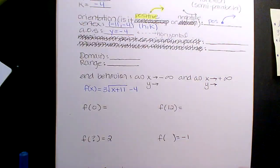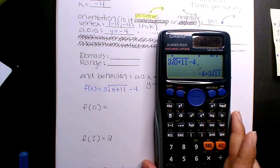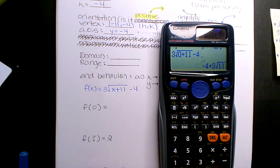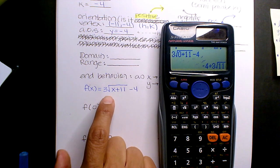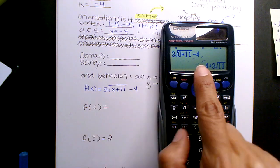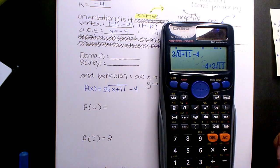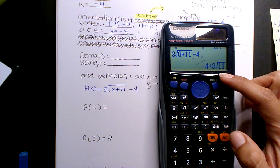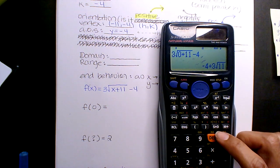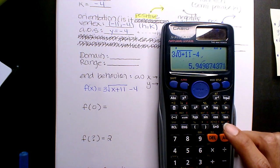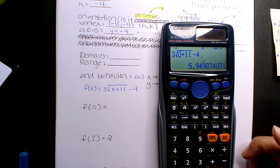You just substitute f of 0. So let x equals 0, put it into the function. Type it in. You're going to get a simplified radical. So even though this is correct, we want something that's graphable. We can plot it. So 5.9.